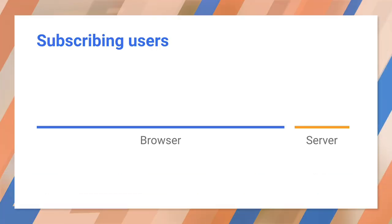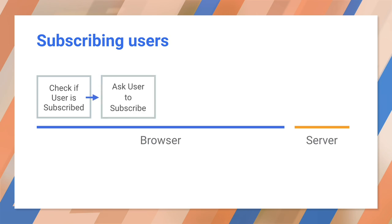Just to repeat: subscribing to the push service and getting the subscription object happen in the JavaScript for the page. First, we check if the user is already subscribed and update the page UI accordingly. If the user isn't already subscribed, prompt them to subscribe. If they are already subscribed, you should still update the server with the latest subscription, since that may have been changed by the push service. When the user grants permission for push on your site, you subscribe them to the browser's push service.